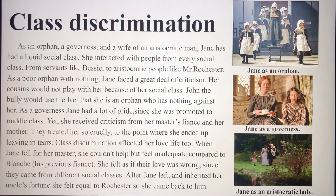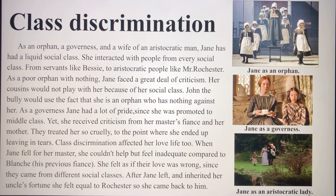As a poor orphan, Jane faced a great deal of criticism from many people such as Mr. Brocklehurst, a servant at Gateshead named Miss Abbot, and her cousins, who would not play with her because of her social class. John the bully used the fact that she was an orphan against her. As a governess, Jane had a lot of pride since she was promoted to the middle class — being a governess was one of the only legitimate ways for a woman to make money. Here she received criticism from her master's fiancée Blanche and her mother, and was constantly talked down to.